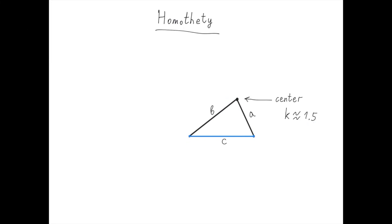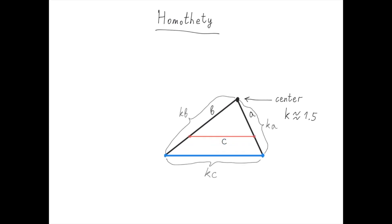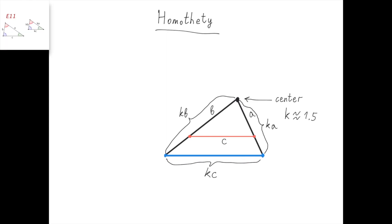Now let's see what this homothety looks like. The image under the homothety of side a is the side which has length k times a, and the image of side b is k times b, and the image of side c is k times c. Essentially, this is exactly the same as what we did on the map in the previous video, where we talked about scaling.